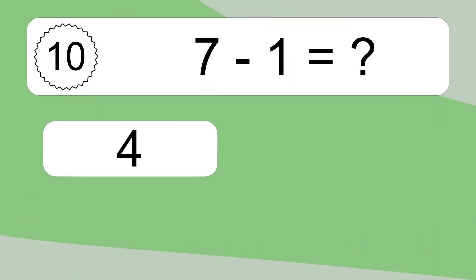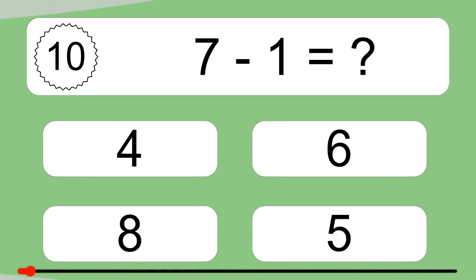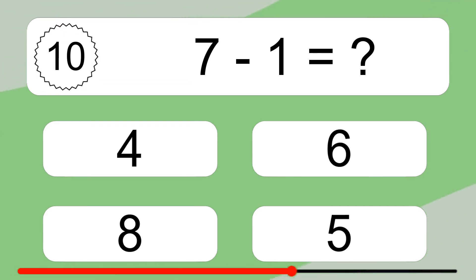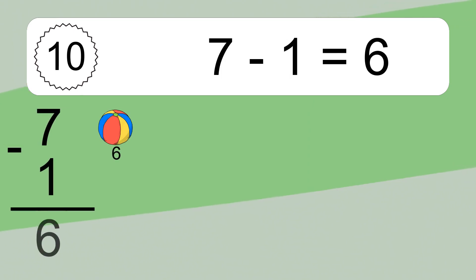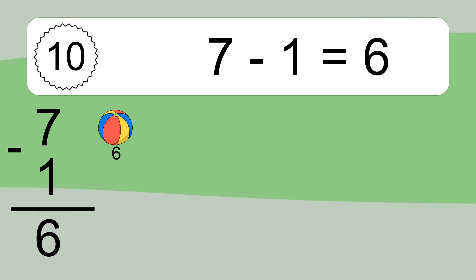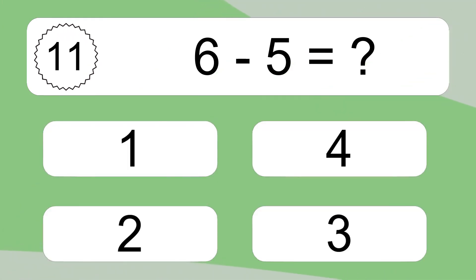7 minus 1 equals what? 7 minus 1 equals 6. Let's count it: 6.